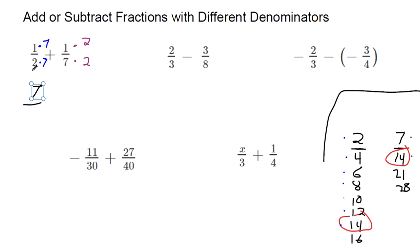1 times 7 makes 7, 2 times 7 makes 14, 1 times 2 makes 2, 7 times 2 makes 14. And now we can add those together. 7 plus 2 makes 9 over 14. Now we've added 1 half plus 1 seventh. It makes 9 over 14.